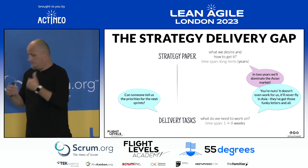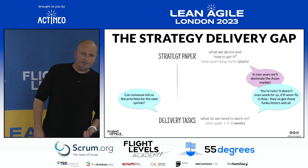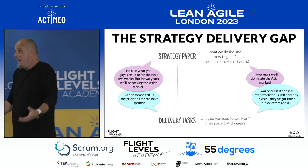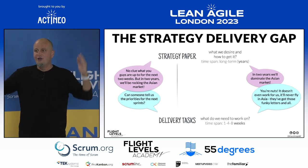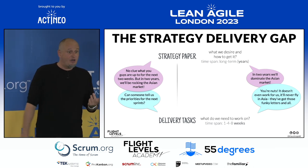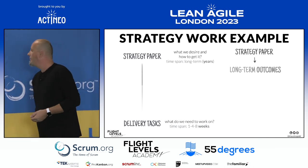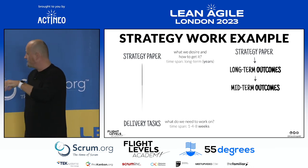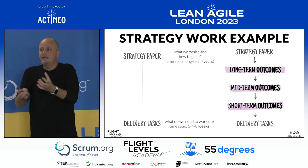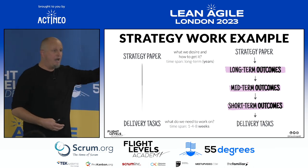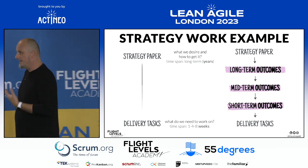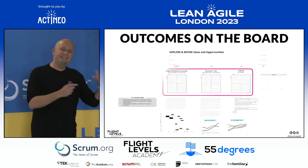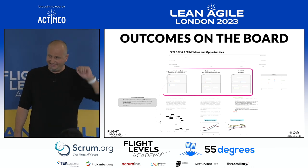There's also the other side: people from the delivery organization ask 'what shall we work on in the next two or four weeks, help us prioritize?' And the strategy people say 'I don't know what you're up to in the next two weeks, but in two years we'll dominate the Asian market.' That's the problem. We can overcome this by taking the strategy paper and deriving long-term outcomes, then mid-term outcomes, then short-term outcomes, and connecting to delivery tasks — all made explicit on our Flight Level 3 system, not in PowerPoint.